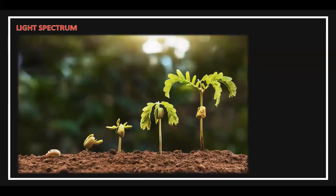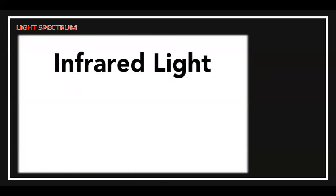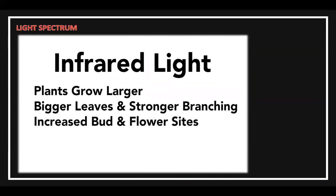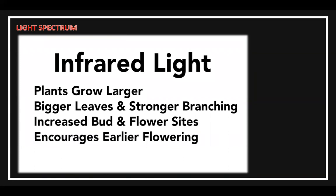Infrared light is not only important for Photosystems I and II — it also drives a host of other reactions in the plant. During vegetative growth, plants react to infrared light by growing larger, including bigger leaves to capture more light and stronger branching, especially beneath the canopy. Infrared also increases the amount of bud and flower sites on the plant and encourages the onset of flowering. Research also indicates that infrared light increases certain antioxidants in the plant that increase aroma and flavor.